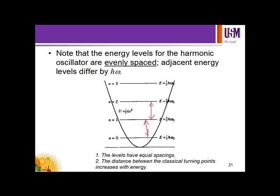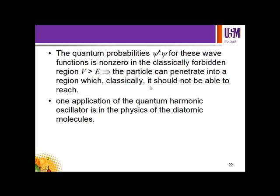The difference between adjacent levels is ℏω, but the first energy level is at ½ℏω. The distance within the classical turning points increases with energy. The quantum probabilities — that is, ψ*ψ for these wave functions — are non-zero in the classically forbidden region where V is greater than E, meaning the particle can penetrate into a region which classically it should not be able to reach.